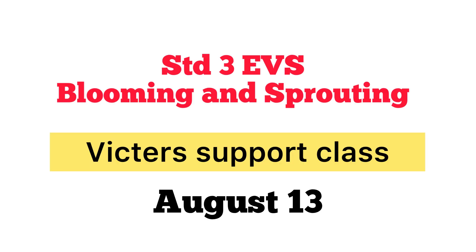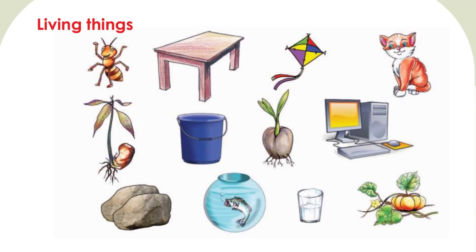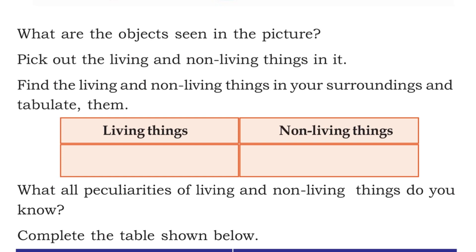Good morning and welcome to today's EVS class. Let's check today's activities. All of you open your textbook to page number 13. Look at the picture. What are the things you can see in the picture? You can see items like a table, kite, cat, plant, bucket, coconut plant, computer, stone, fish, glass, and pumpkin. Can you classify these items into two groups: living things and non-living things?